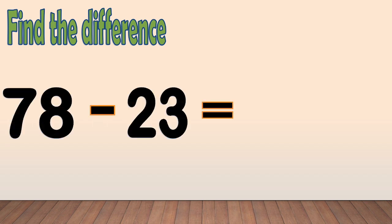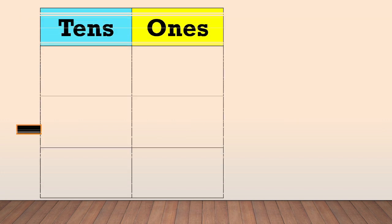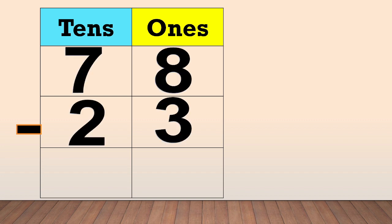Another example: 78 minus 23. First, arrange the numbers in columns like this. Place the digit of the number in a column based on its place value. 78 minus 23.